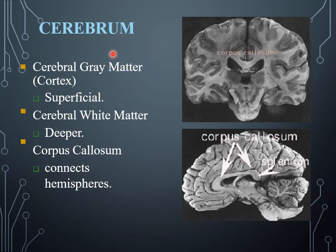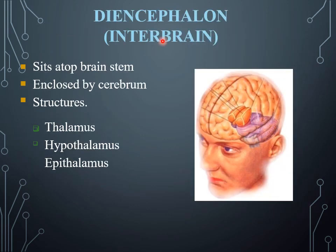The cerebrum also contains gray matter known as the cerebral cortex, which is superficial, and white matter that is deeper. The corpus callosum connects the different hemispheres. This contains the two hemispheres — the right and left hemisphere.